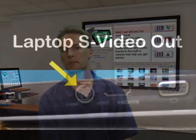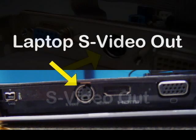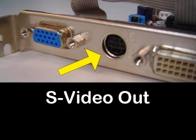To make all this possible, your computer needs to have a TV output jack. On a laptop you'll likely see an S-video jack that looks like this. On a desktop computer you might find either an S-video jack or a yellow composite video jack, depending on the video card you're using. These are referred to as dual head video cards.